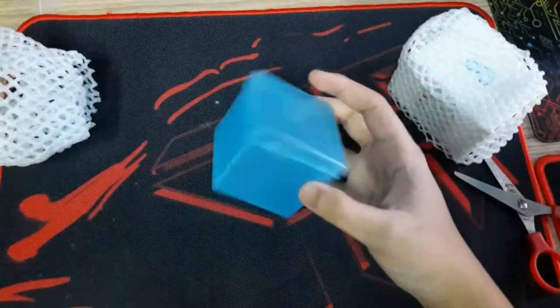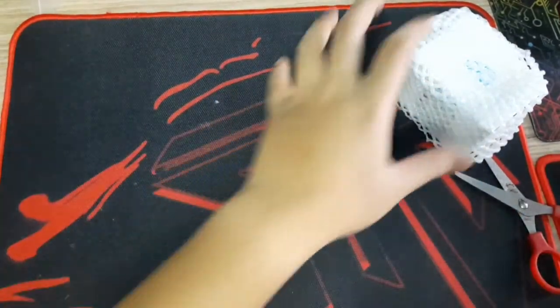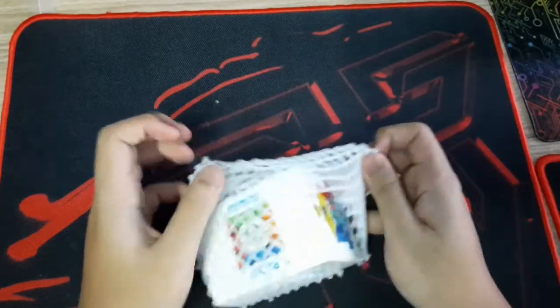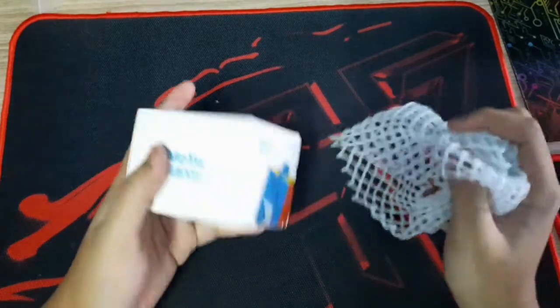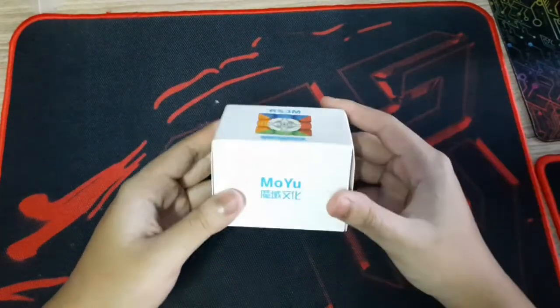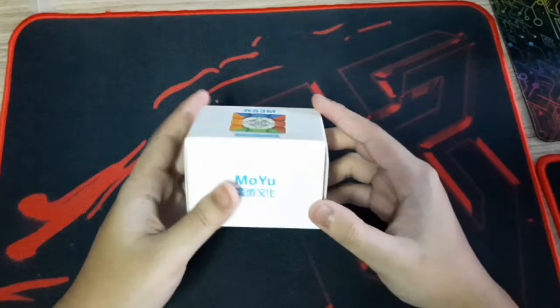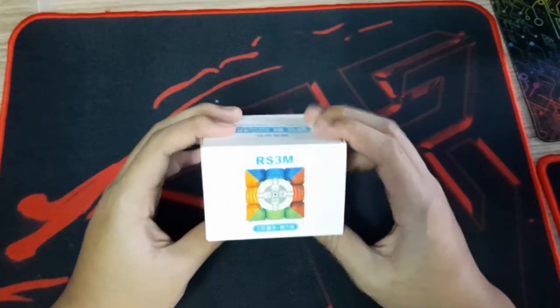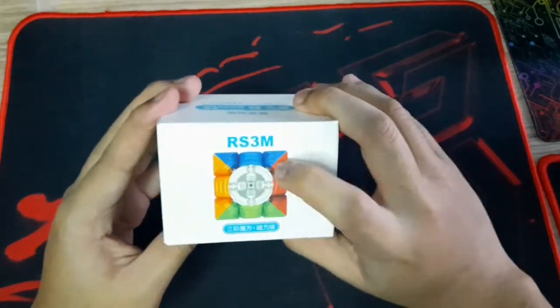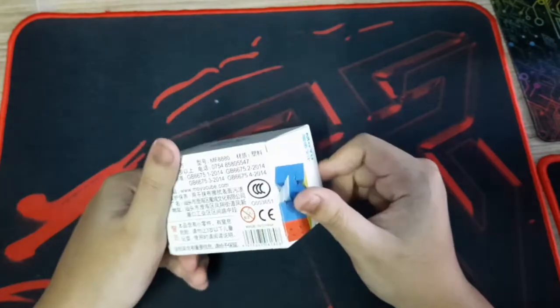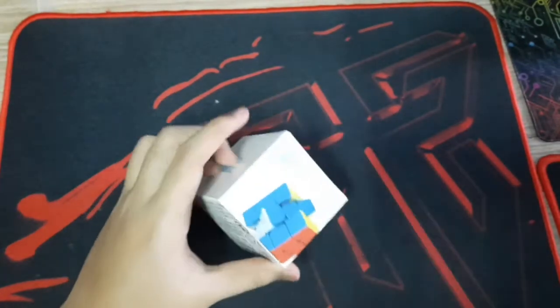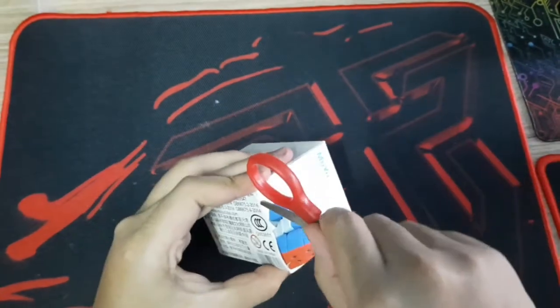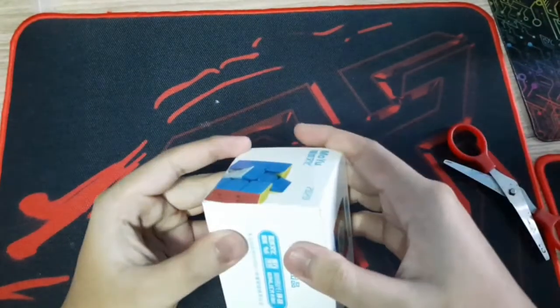My main thing is this one. This is the new Moyu RS3M 2020 that many people say is a very good cube at its price point. In Malaysia it costs only 22 ringgit, which is very cheap and it's magnetic. Let's open it up. There's another seal here.